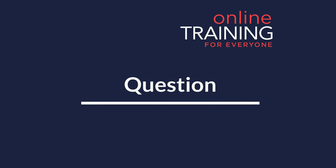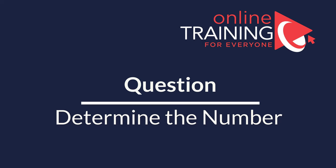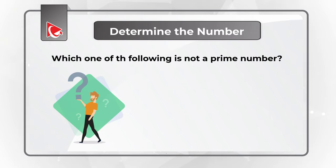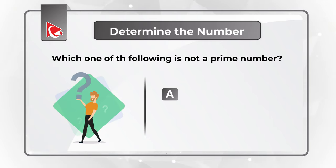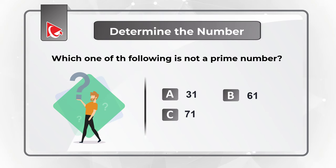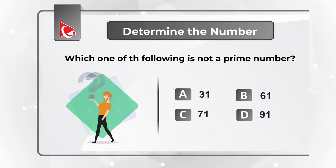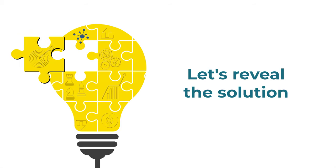Here's an interesting question where you are presented with a set of numbers and you need to determine which number is not a prime number. You have 4 different choices: Choice A, 31; Choice B, 61; Choice C, 71; and Choice D, 91. Give yourself a little bit of time — maybe recall the definition of prime numbers — and see if you can come up with the solution.